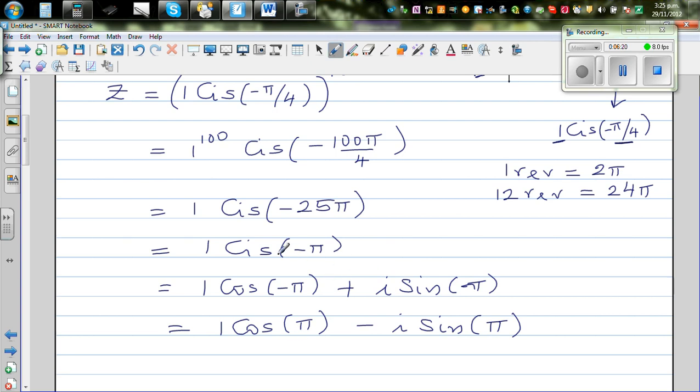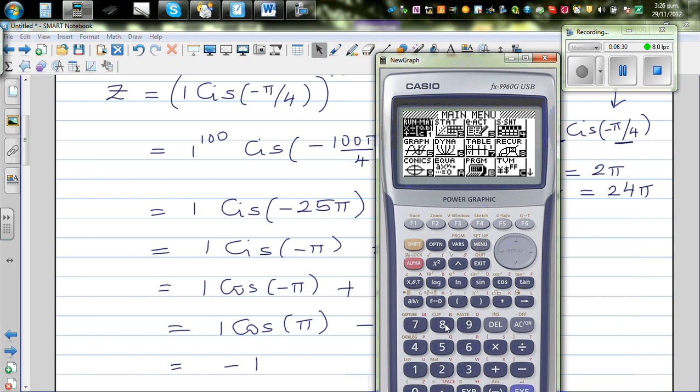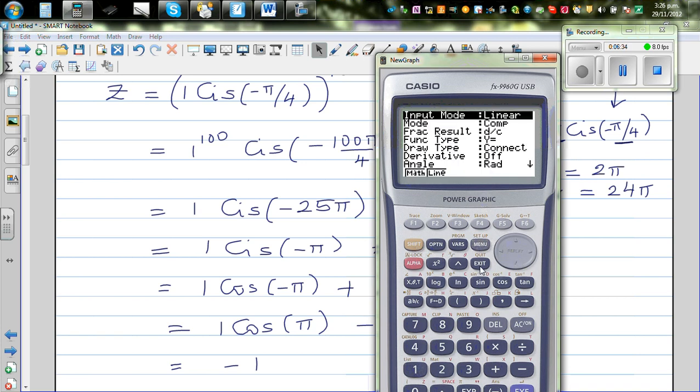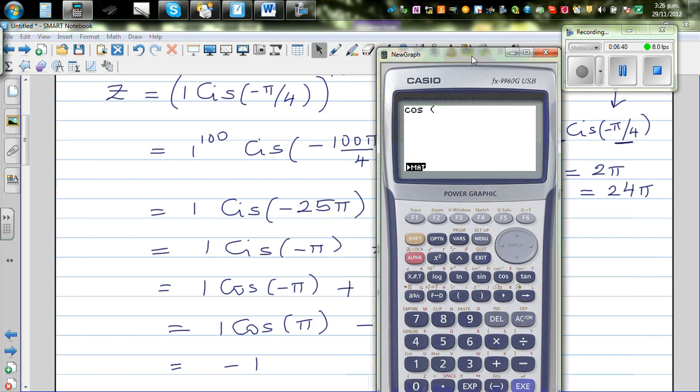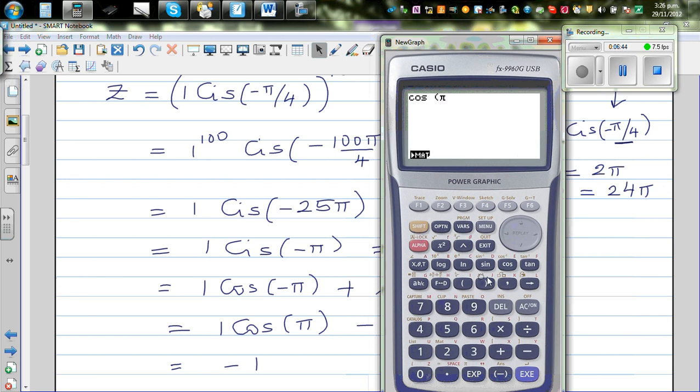If you want to use a calculator, let me check my settings. It should be in radians. So if you go cos negative pi, or cos pi, shift pi, minus option complex number i sine pi, shift pi, which is negative one.